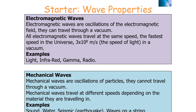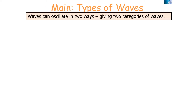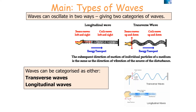Mechanical waves are oscillations of particles and cannot travel through a vacuum. They travel at different speeds depending on the material they travel through. Examples include sound waves, seismic waves, water waves, and waves on a string. Waves can oscillate in two ways, giving us two different categories: transverse waves or longitudinal waves.